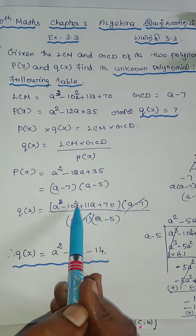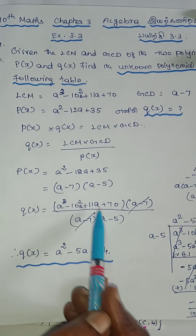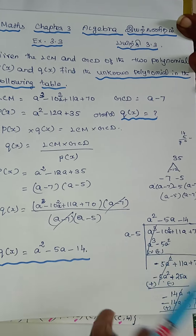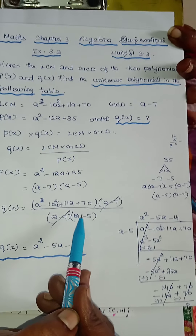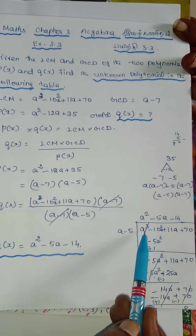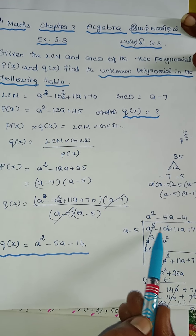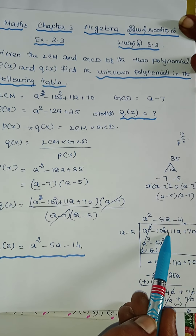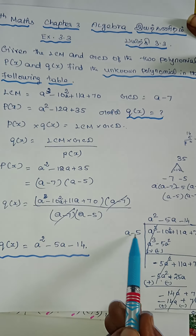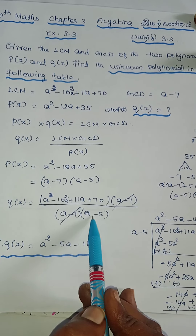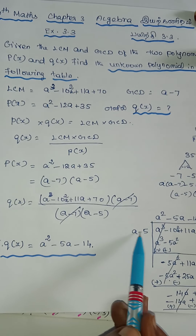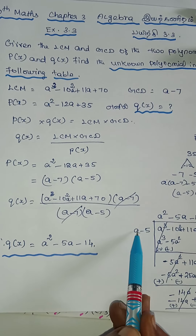This is how we can do it. This is the formula. What we can do is long division — this is the method. So long division: a cubed minus 10a squared plus 11a plus 70. This is (a minus 5). We divide it by (a minus 5).